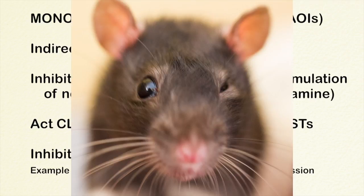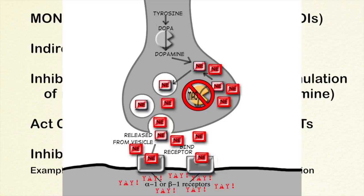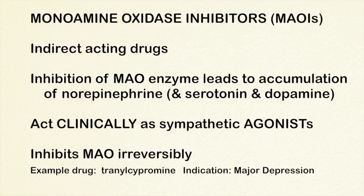You might ask: how can an inhibitor be an agonist? The fact that it's inhibiting the enzyme that breaks down norepinephrine means that norepinephrine levels rise. So when talking about indirect acting drugs, the words agonist and antagonist refer to whether or not that drug acts like an agonist or an antagonist if it were direct acting. We are going to talk more about MAOIs in the CNS unit.